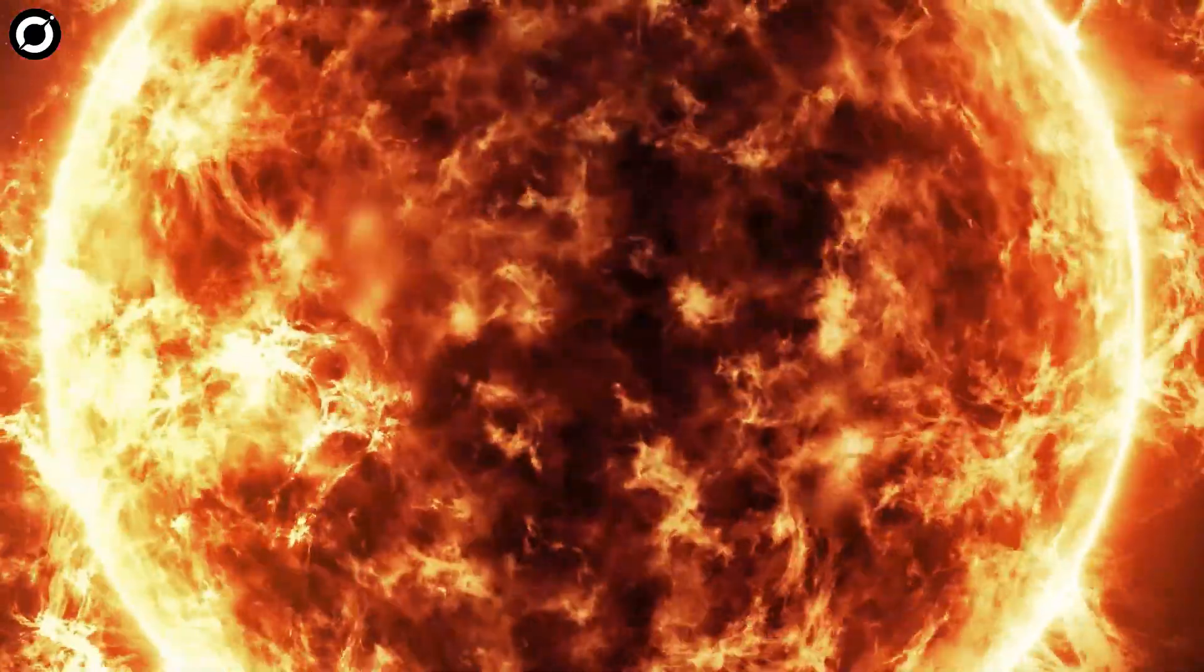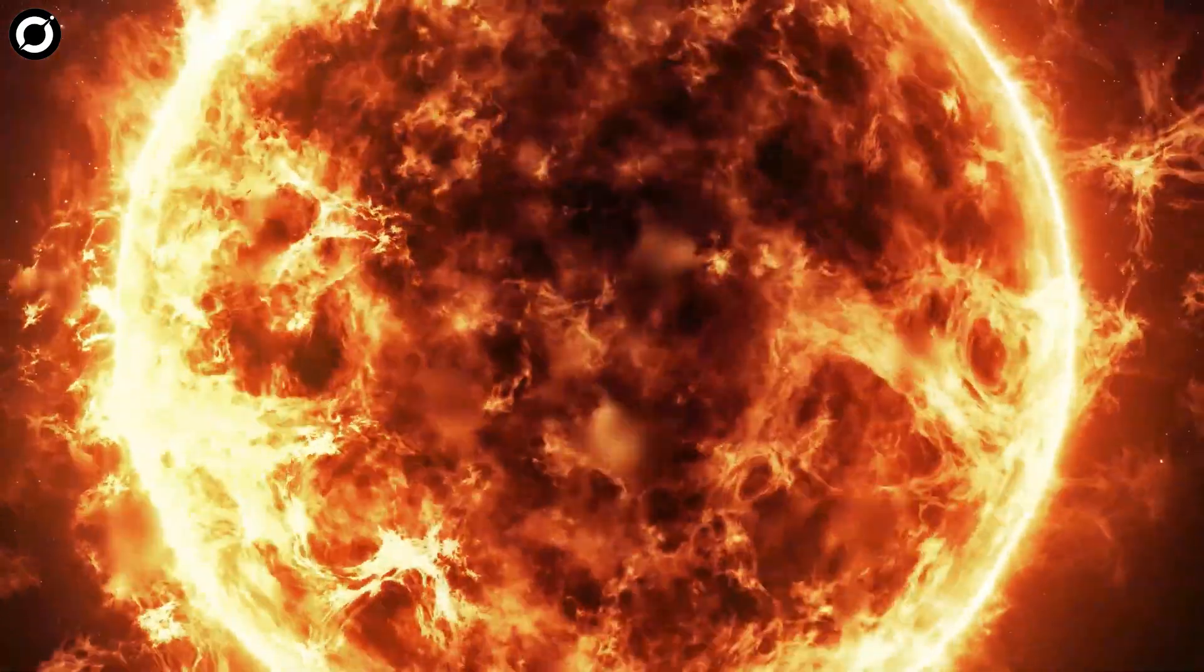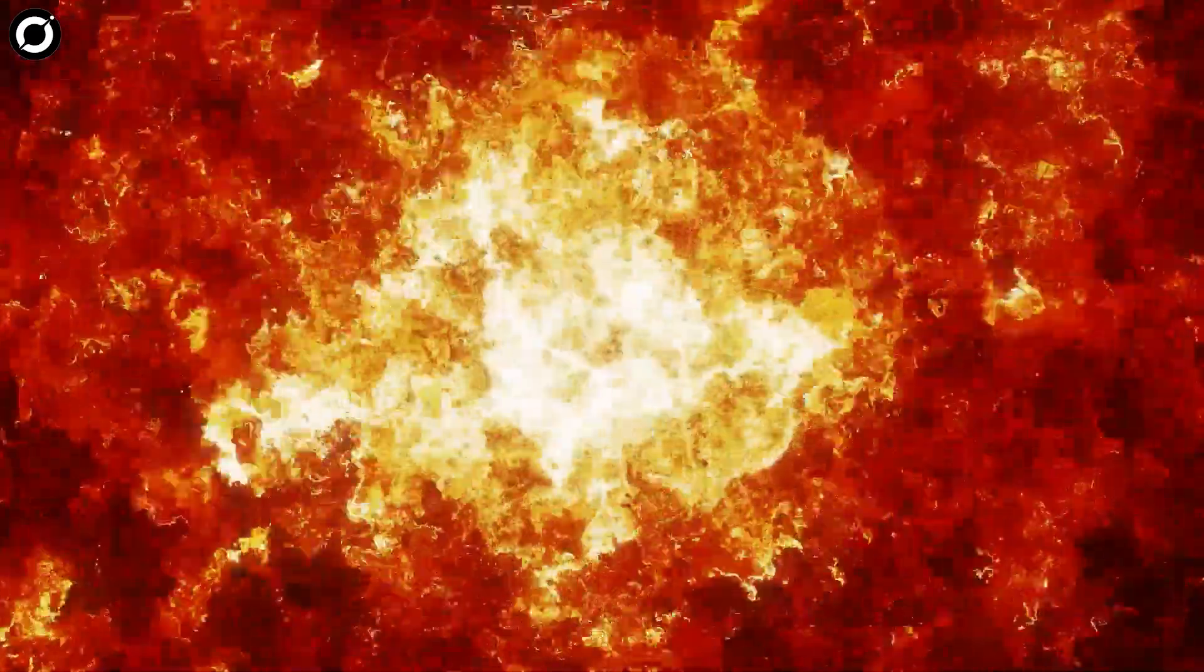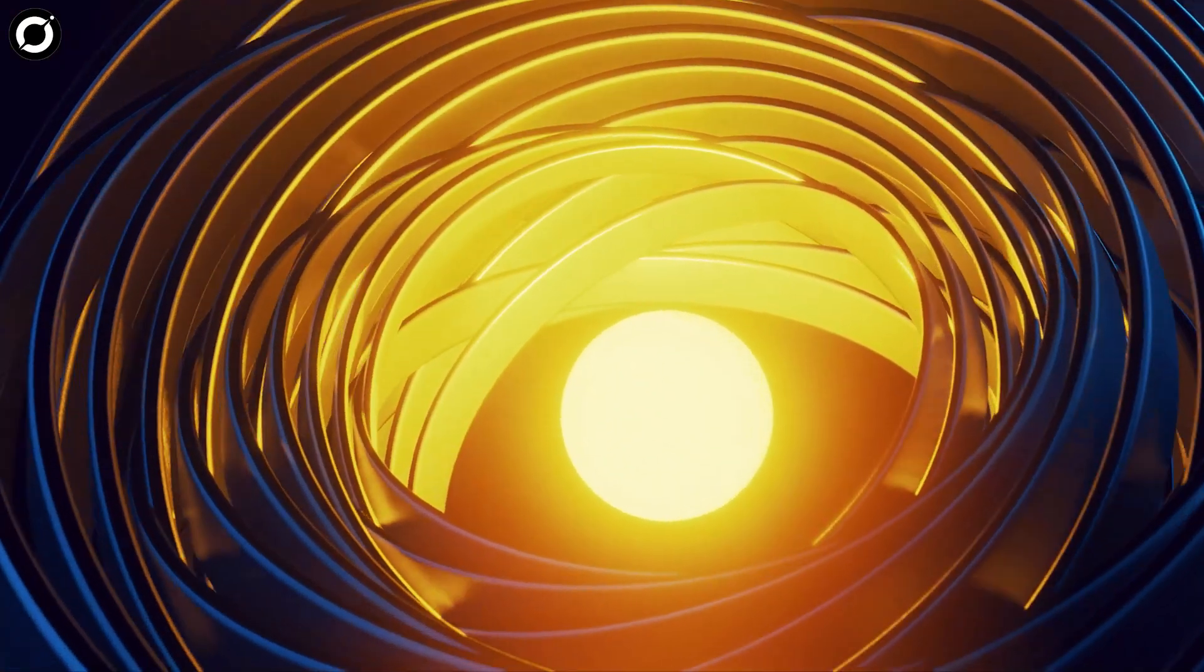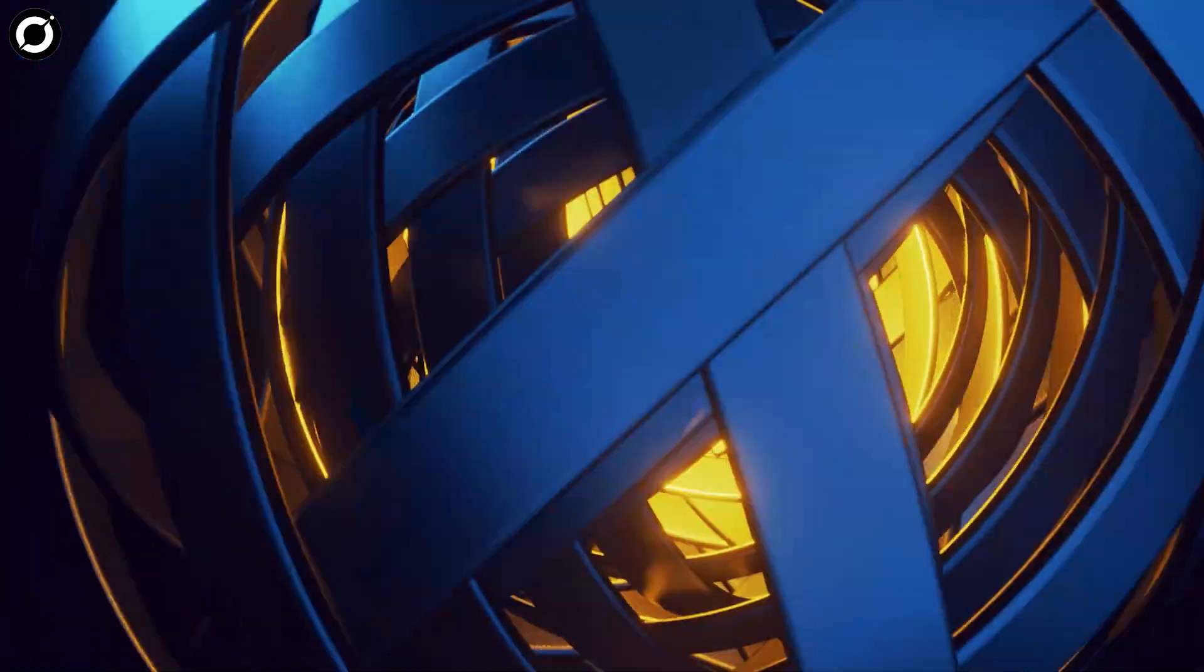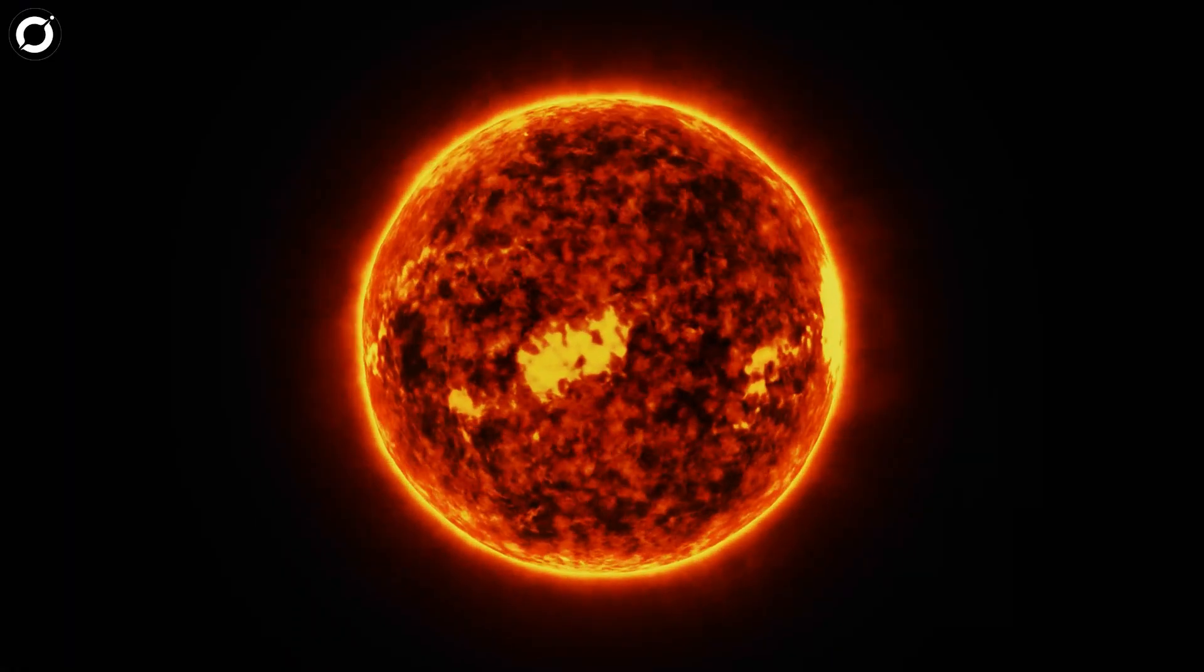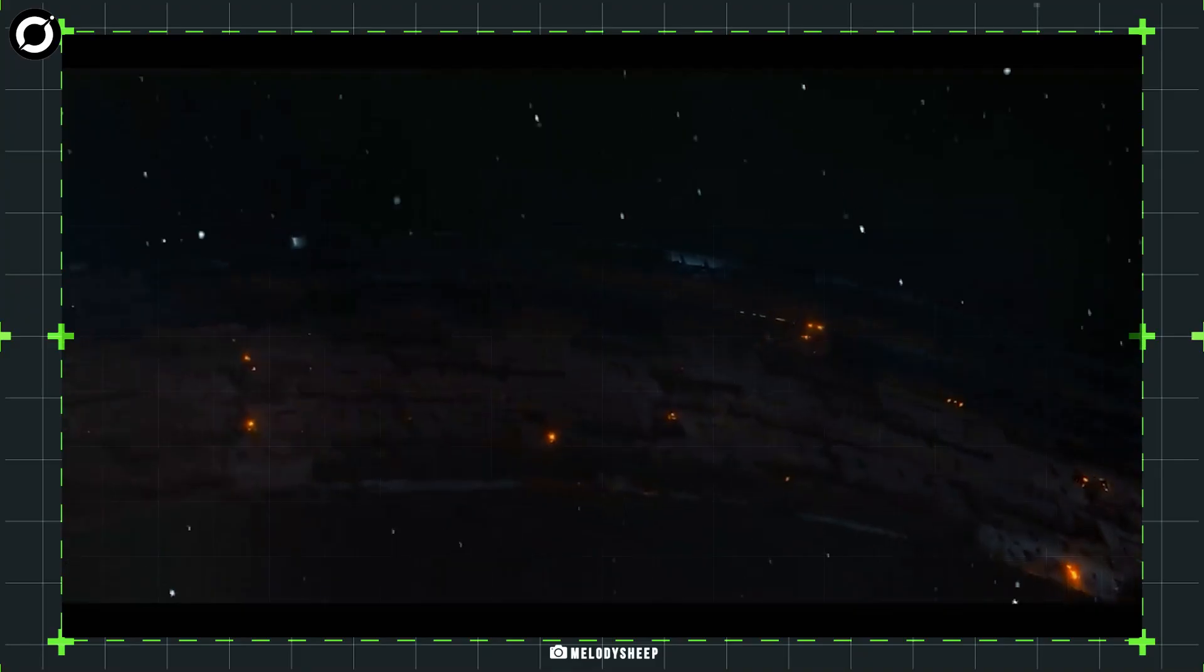Stars like our sun spend most of their lives as gargantuan thermonuclear reactors, fusing hydrogen atoms into helium atoms deep in their cores. That reaction releases tremendous amounts of energy, which pushes against the star's tremendous weight, keeping the whole thing from collapsing. But when the hydrogen runs out, so does the clock on life in the solar system.